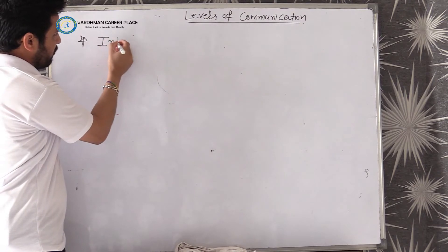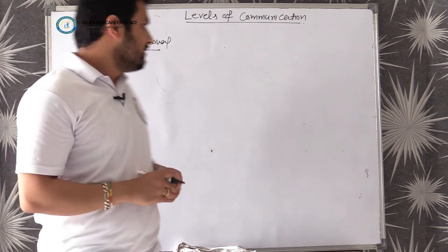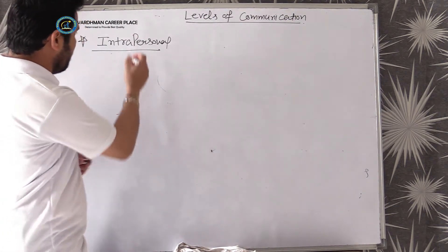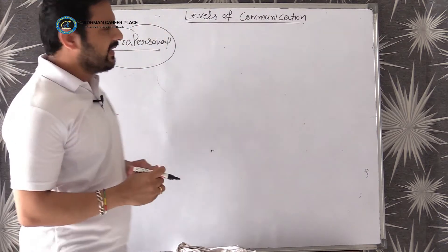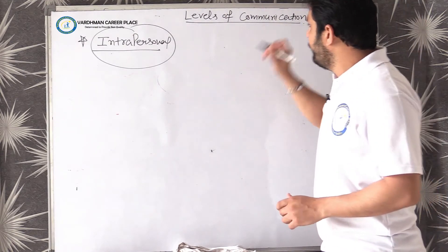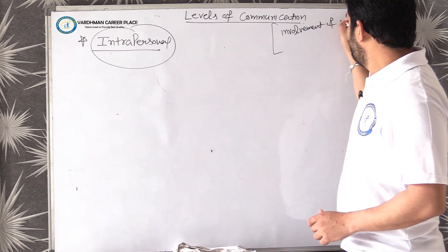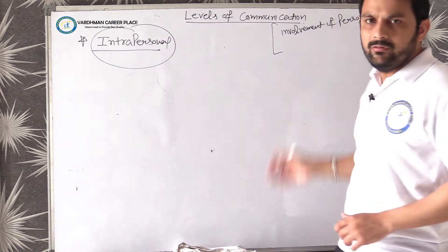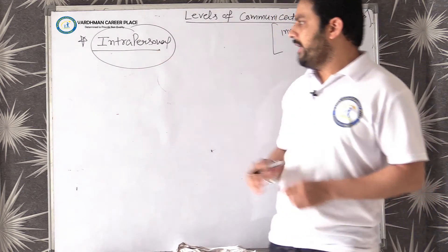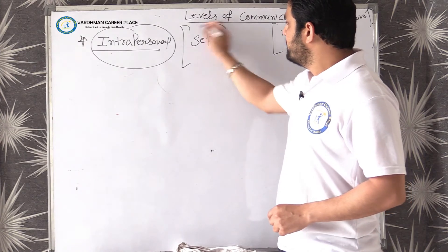First of all, our first level of communication is intrapersonal communication. I will use a very detailed level of communication. The keyword for intrapersonal communication is self-conversation.